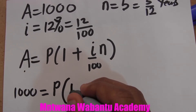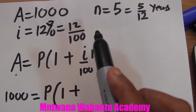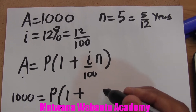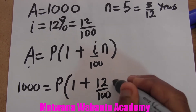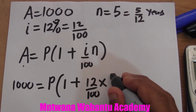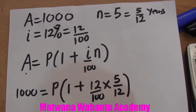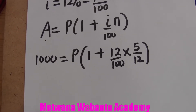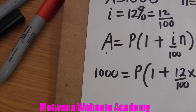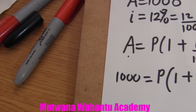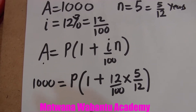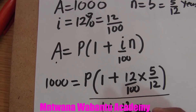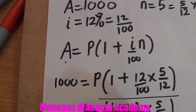We're looking for the present value — the principal, the amount used to invest. The interest rate is 12%, which we write as 12 over 100. Time is 5 months converted to years. To find P, we make P the subject by dividing throughout by (1 plus 12/100 times 5/12).